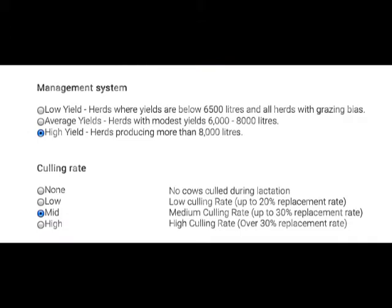The management system allows you to fine-tune the prediction based on how your cows are managed. Low yield reflects herds that have a seasonal bias, typically spring calving cows. High yield reflects cows where the lactation is constant, more typically seen with high yielding herds. The average yield reflects a typical UK herd, if there is such a thing. The culling rate works by assuming about half of the total culling is of cows in lactation, and there are three tiers of culling possibilities as described on the screen.